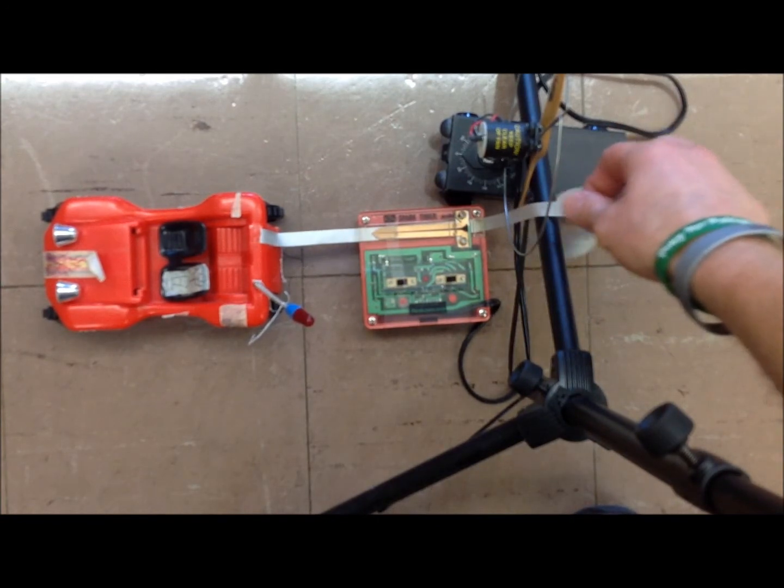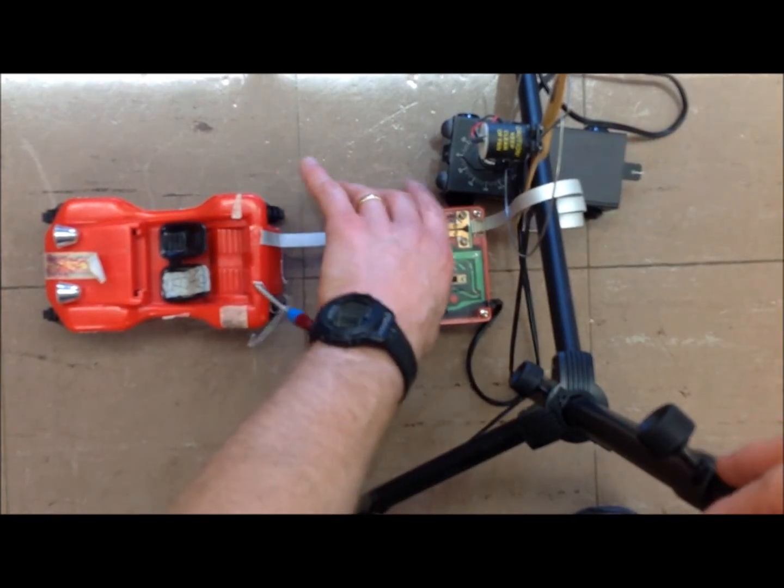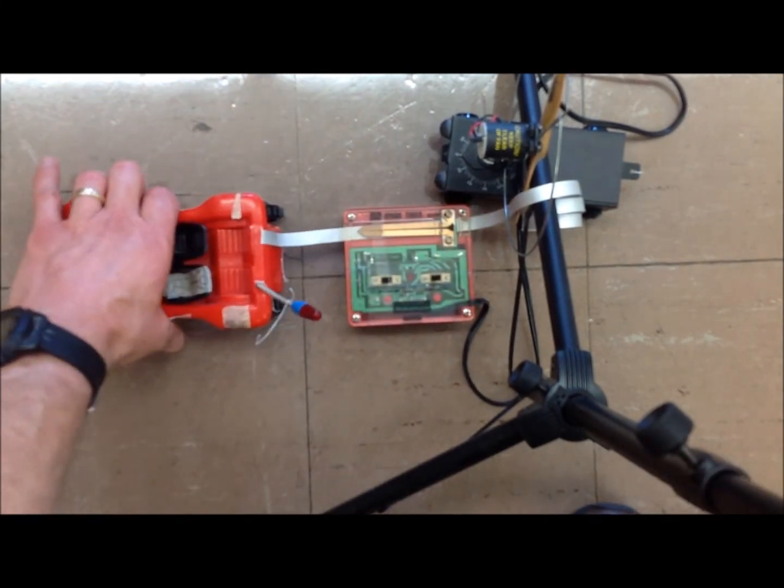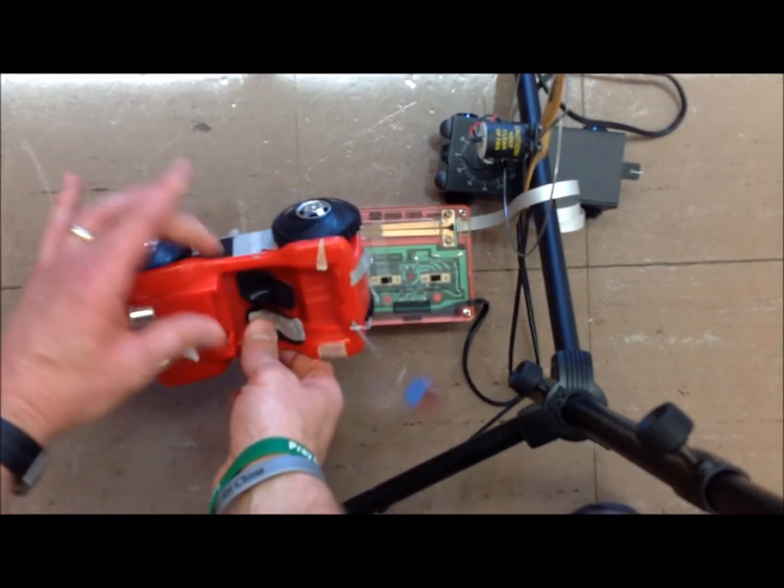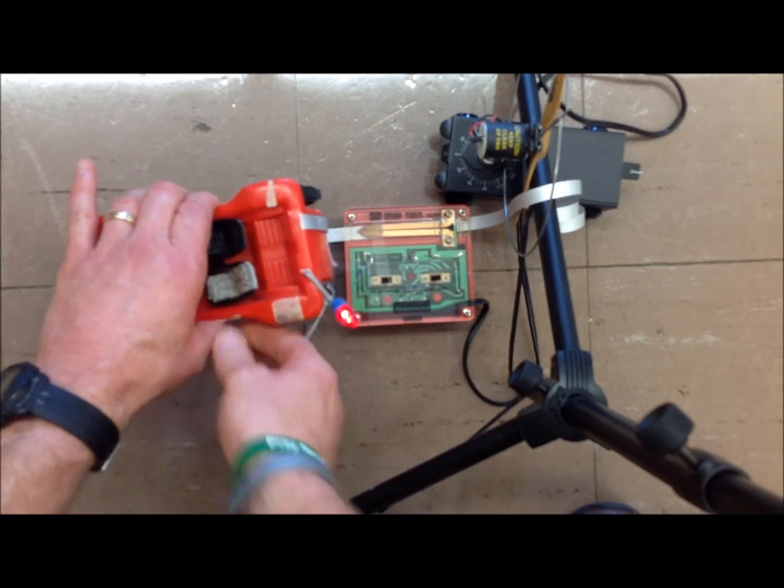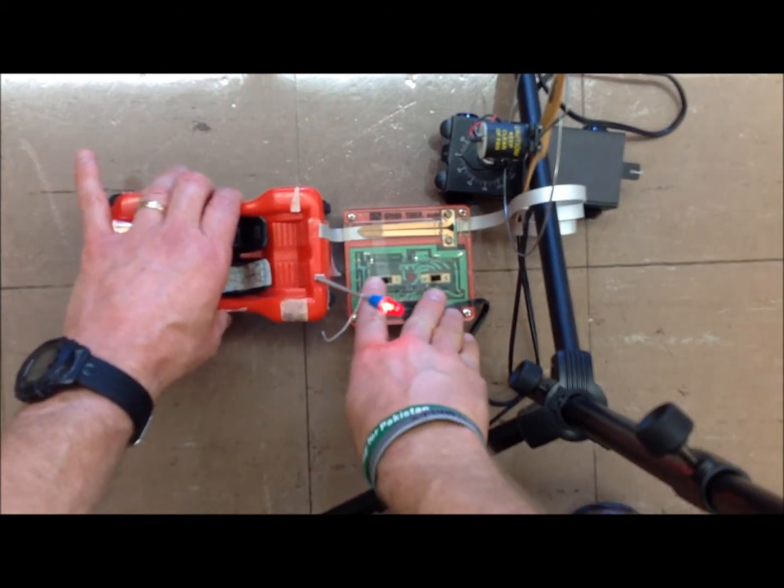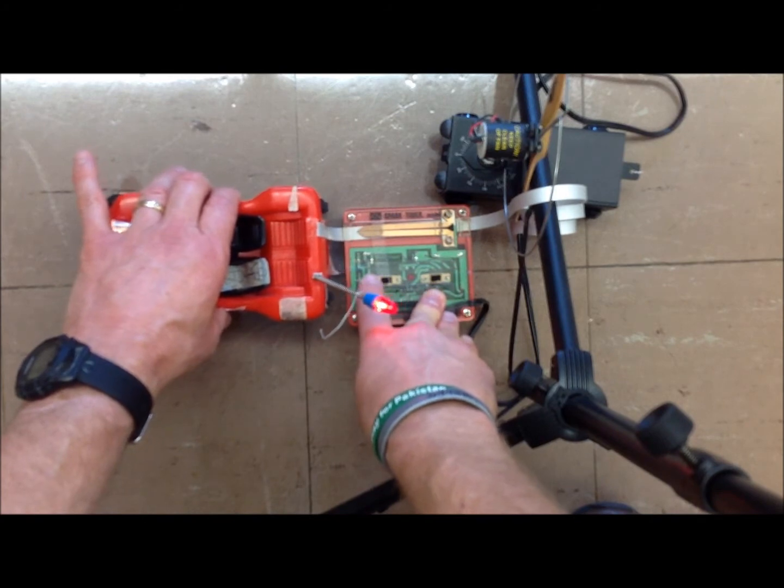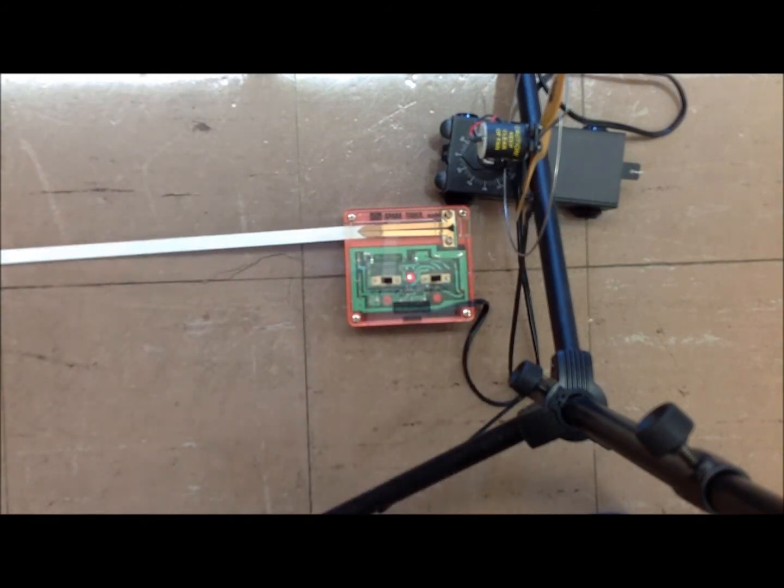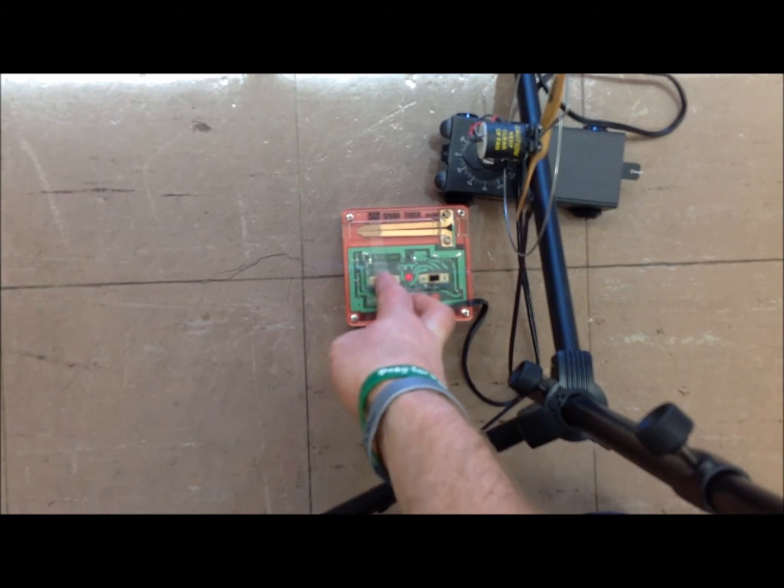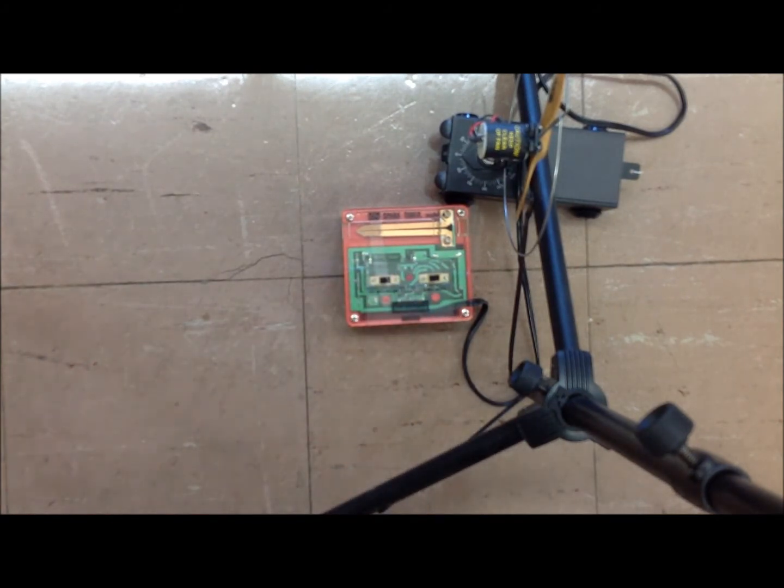Once you get it set up, for the dune buggy, you're going to lift it up off the ground and turn it on. It's probably easier if you have two hands instead of one like I do. Once you set it down, then you turn the spark timer on. Then you turn the spark timer off. You need somebody at the other end to catch the dune buggy.